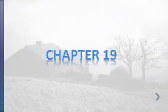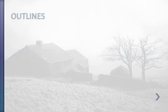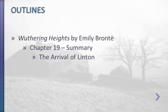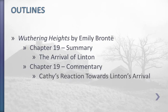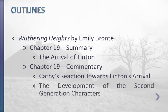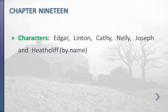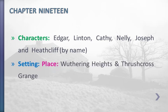Regarding chapter 19, we will discuss the summary of the chapter, which contains one important point: the arrival of Linton. We will also discuss the commentary, which contains two important points: Kathy's reaction to Linton's arrival, and the development of the second generation characters. The main characters in chapter 19 are Edgar, Linton, Kathy, Nellie, Joseph, and Heathcliff. The setting includes Wuthering Heights and Thrushcross Grange, set years before 1801.